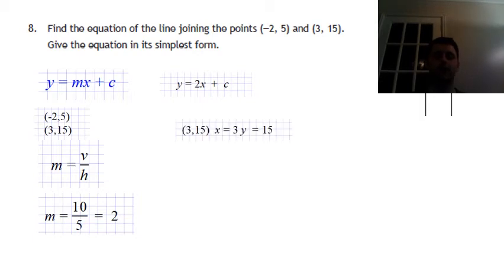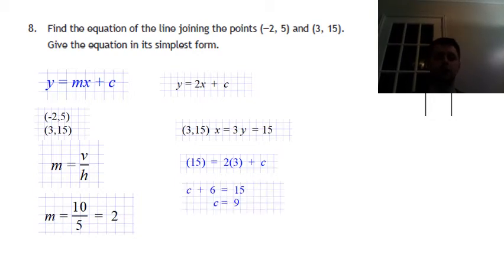I'm going to fire that into the equation. I end up with 15 equals 2 times 3 plus c. So I can work out what that is now. I'll rearrange it, so it's c plus 6 equals 15. So c must be 9. So therefore the general equation of the line is y equals 2x plus 9.